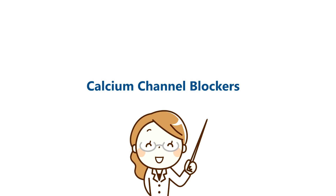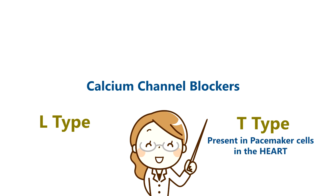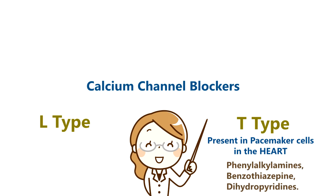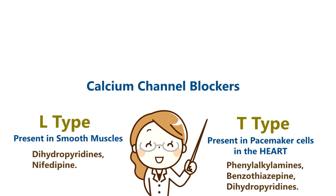There are two main types of calcium channels: L-type and T-type. T-type calcium channels are present in pacemaker cells. T-type calcium channel blockers include phenylalkylamines, benzodiazepines, and dihydropyridines. L-type calcium channels are present in smooth muscle. L-type calcium channel blockers include dihydropyridines such as Nifedipine. Calcium channel blockers reduce heart rate and cardiac output, which leads to lowering of blood pressure.